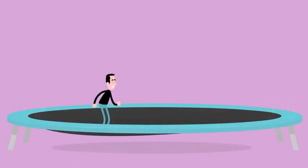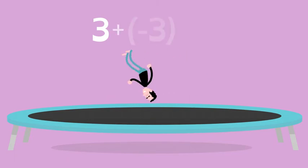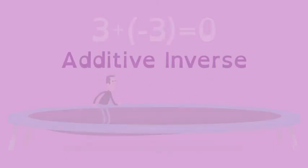You can use it to describe opposites. If you did a front flip on a trampoline, and then did an Additive Inverse back flip, then you'd be right where you started.